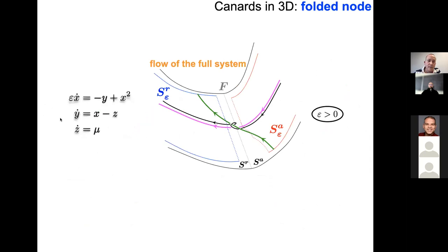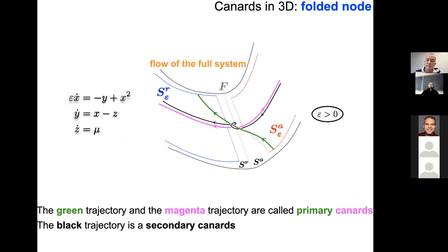For epsilon non-zero, not infinitely many solutions cross robustly, but certain solutions do cross from one side to the other — these are canards. They have very specific behavior: while crossing from attracting to repelling side, they make oscillations near the folded node. There are two primary canards, but also more complicated solutions with oscillations in the middle that are important in application systems.